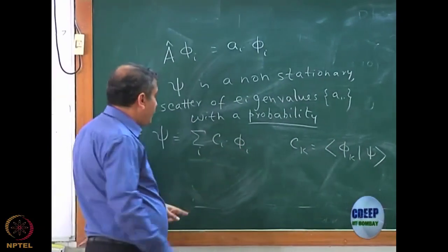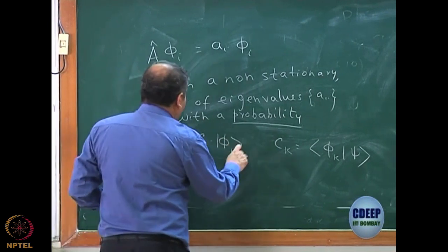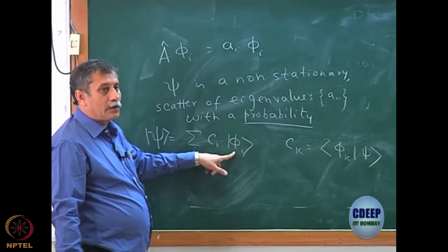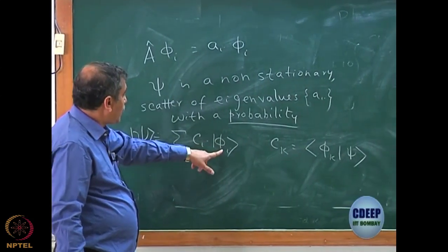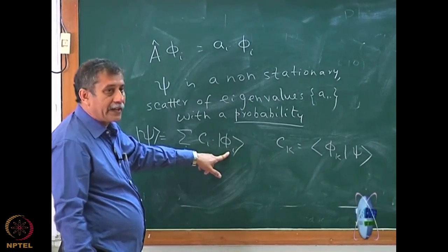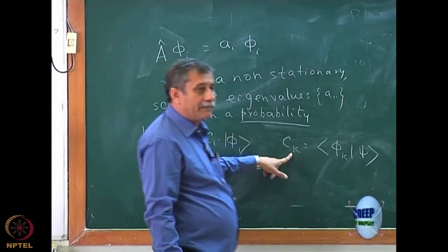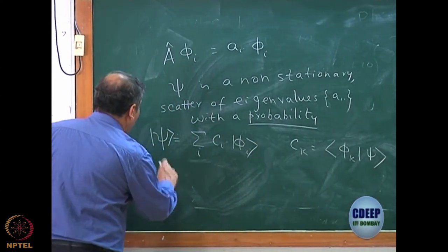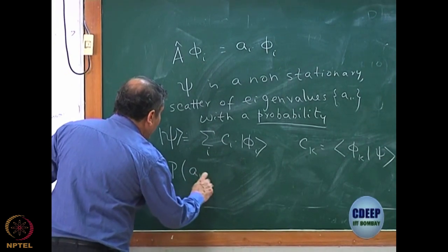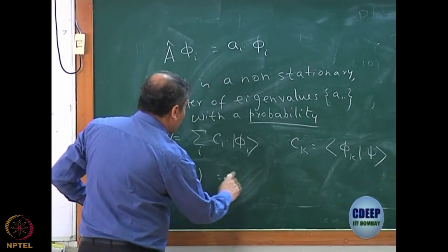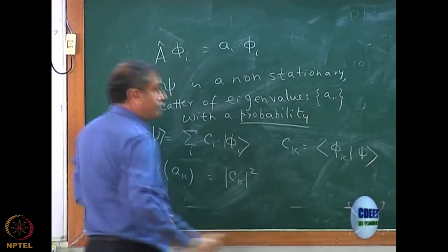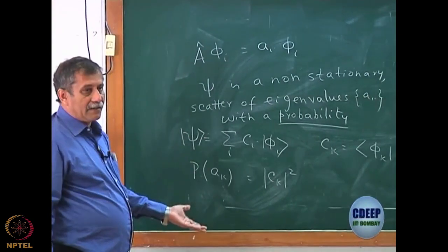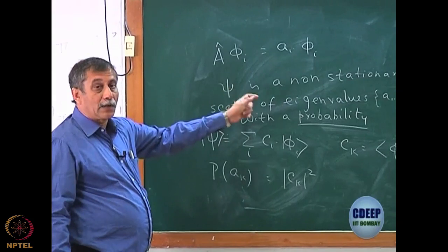That is easy to show. Expand ψ as Σ C_i φ_i. If I write it in Dirac notation, expand ψ as C_i φ_i, then project with φ_k. Because all φ_i's will be orthogonal to φ_k, the only one that survives is when the sum includes φ_k, and the result is C_k. We have done this before. Then we say that the probability of getting A_k — the k-th eigenvalue — is nothing but |C_k|².